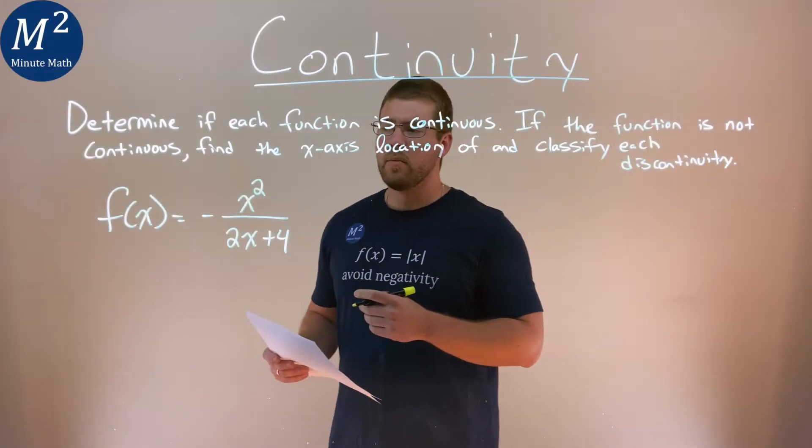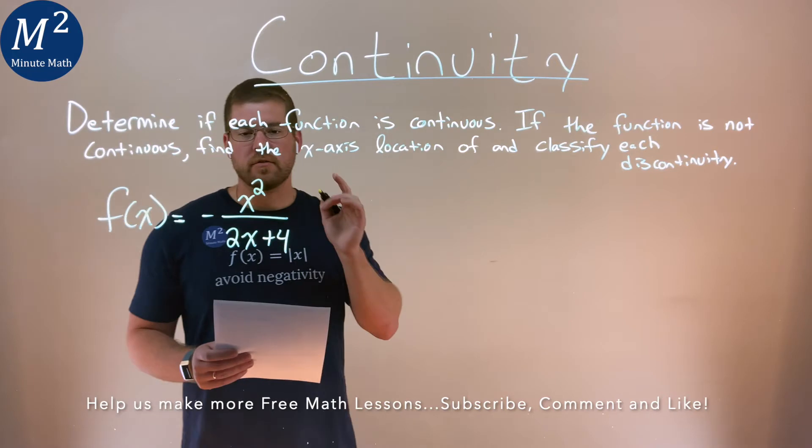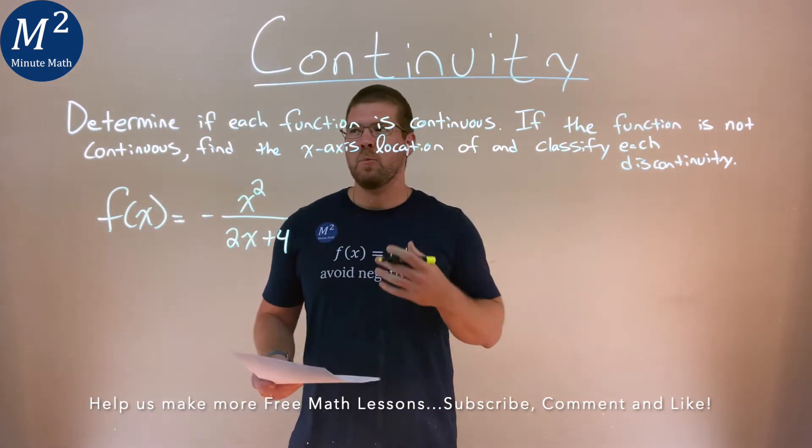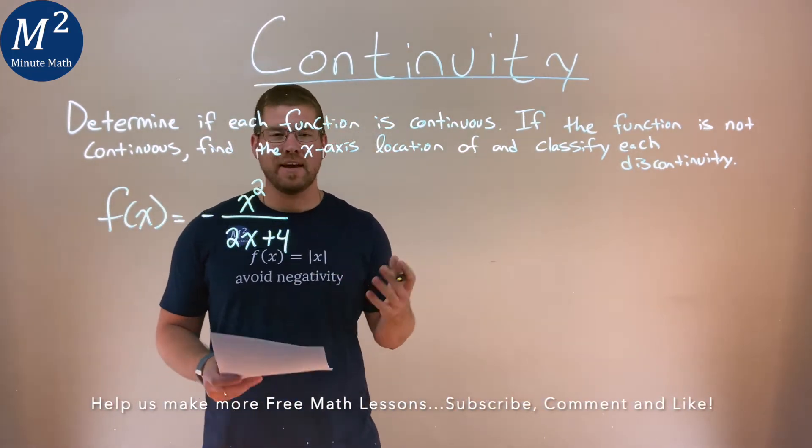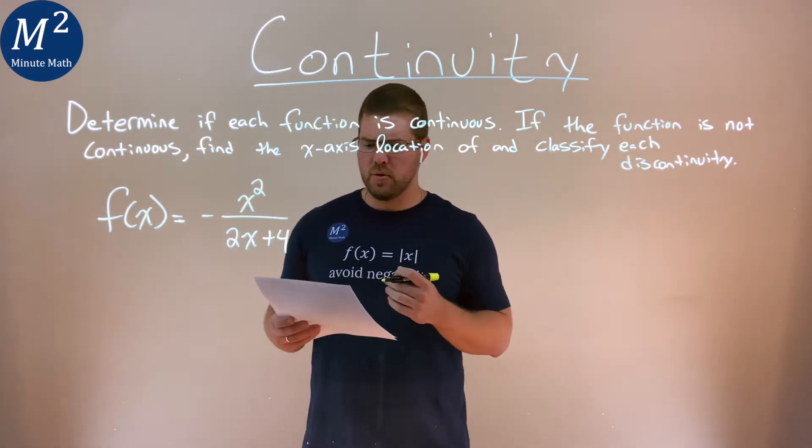We're given this problem right here. f(x) is equal to negative x squared over 2x plus 4, and we need to determine if this function is continuous and what type of discontinuity it has, and where that is located.